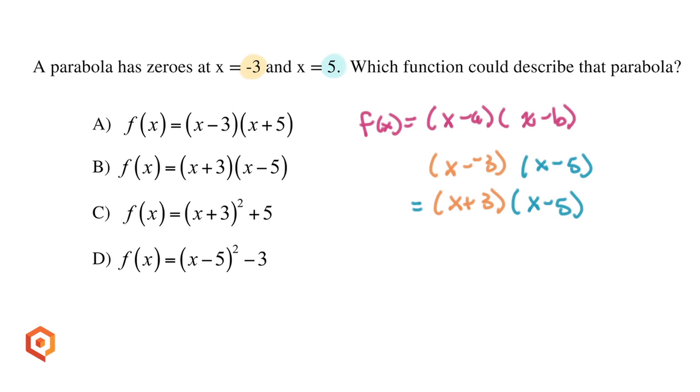x equals 5 gives us the linear factor x minus 5. Multiplying them together and turning it into a function, we get f(x) equals x plus 3 times x minus 5, or answer choice B.